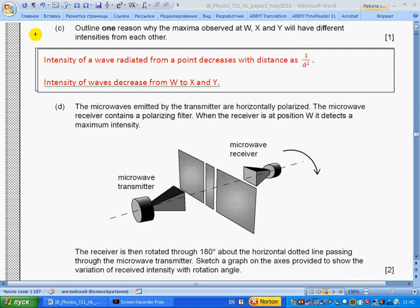Part c: Outline one reason why the maxima observed at W, X, and Y will have different intensities from each other. Intensity of waves radiated from a point—here S1 and S2—decrease with distance as distance squared. Intensity of waves decreases from W to X and Y.